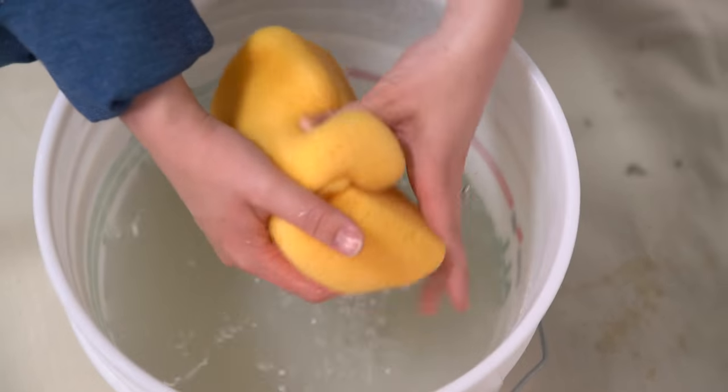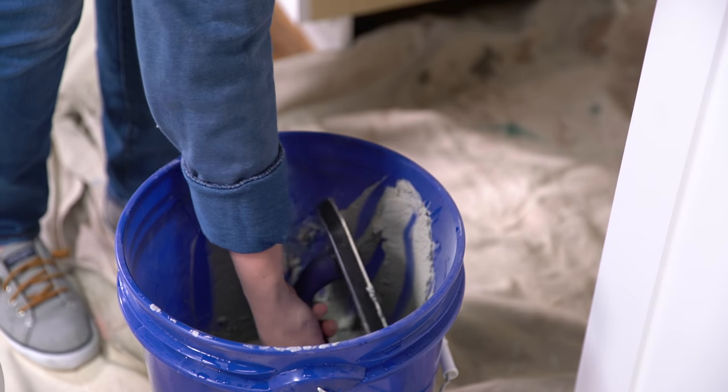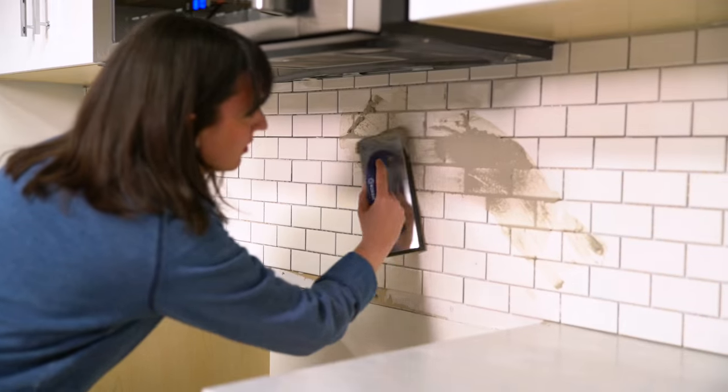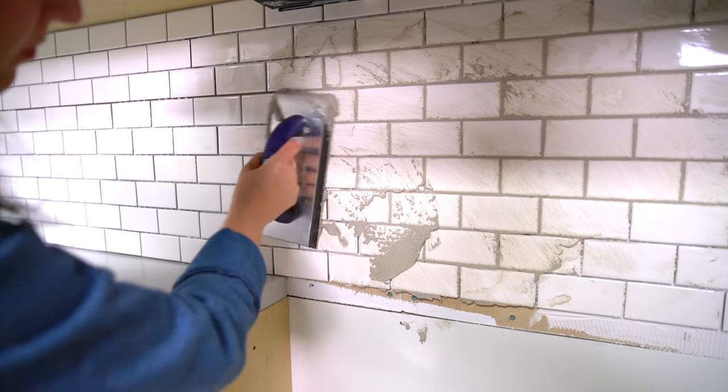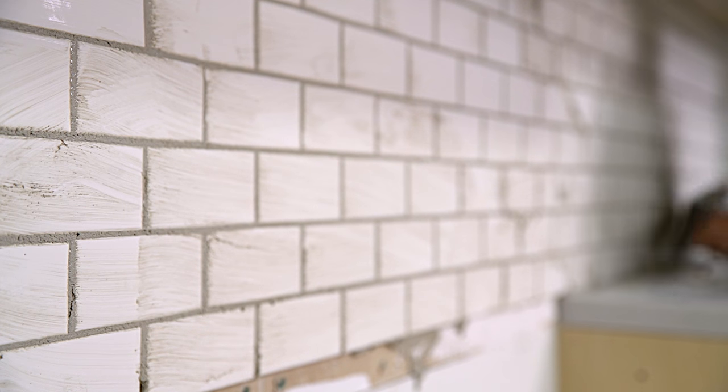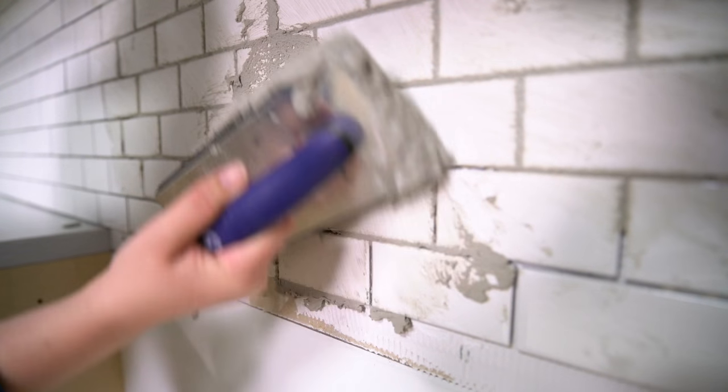Remove the spacers from the backsplash and wipe down the tiles with a barely wet sponge to remove any dust. Use a trowel to apply the grout in sections, moving back and forth to push the grout into the spaces. Don't worry about getting grout on the tile—the important part is to push enough grout into the spaces.